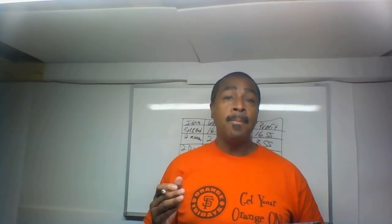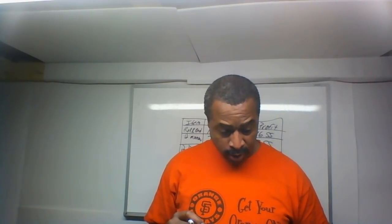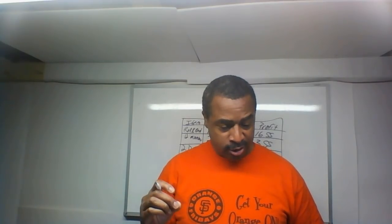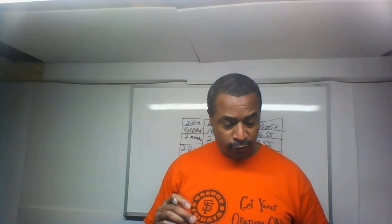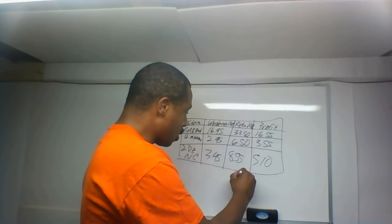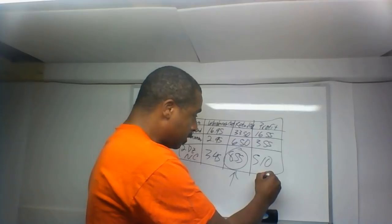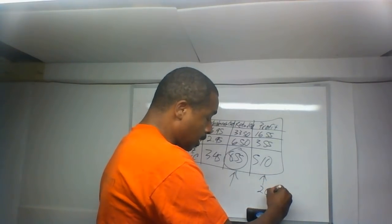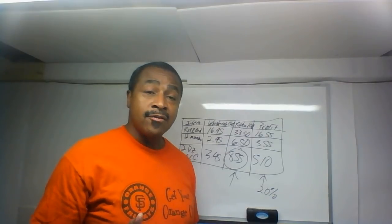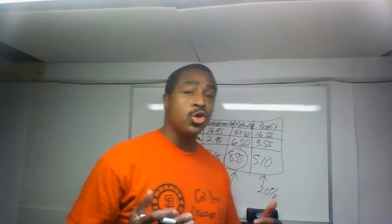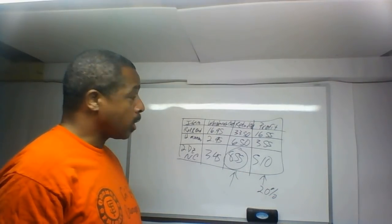Now go back to the question: if Don wants to increase his profit margin on nightcrawlers by 20%, what would be the new retail cost? The retail cost is $8.55 and his profit is $5.10. We need to find what 20% of $5.10 is. The way you do that is drop the percent sign and move the decimal two spaces to the left, converting 20% to 0.20.